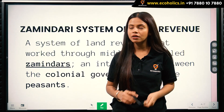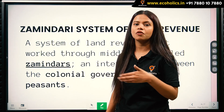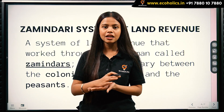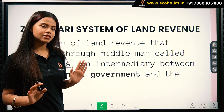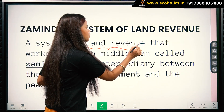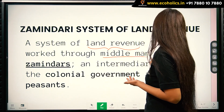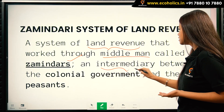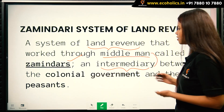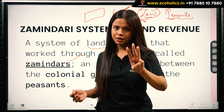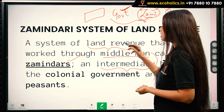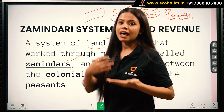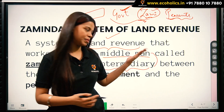Let's first understand the zamindari system to see how the agricultural sector was exploited under colonial rule. The zamindari system is a system of land revenue that worked through middlemen known as zamindars. Zamindars were intermediaries between the colonial government and the peasants. So basically, three people were involved: the government, the zamindars, and the peasants. The zamindars collected revenue from the peasants and gave it to the government.